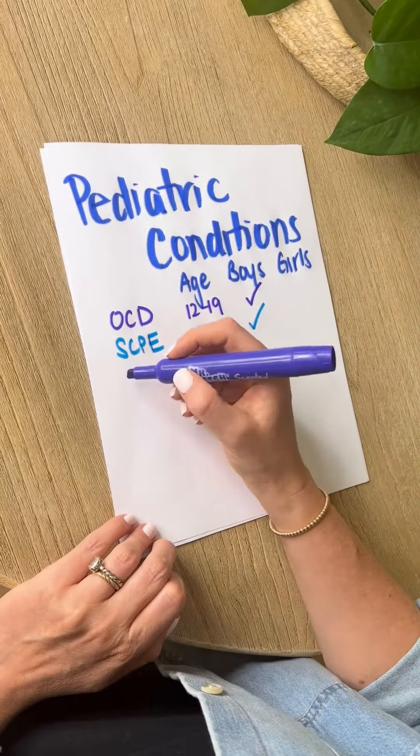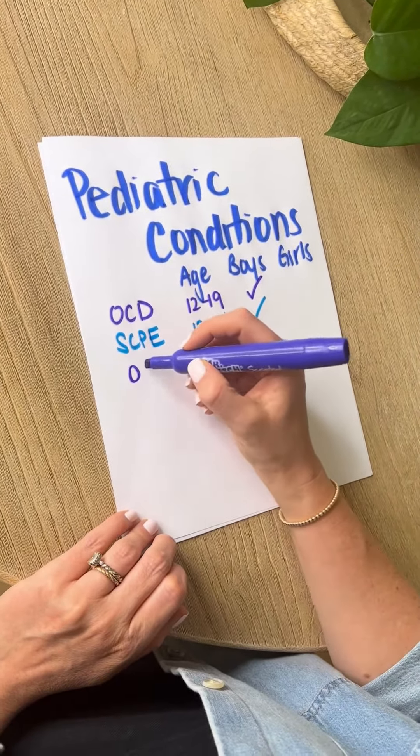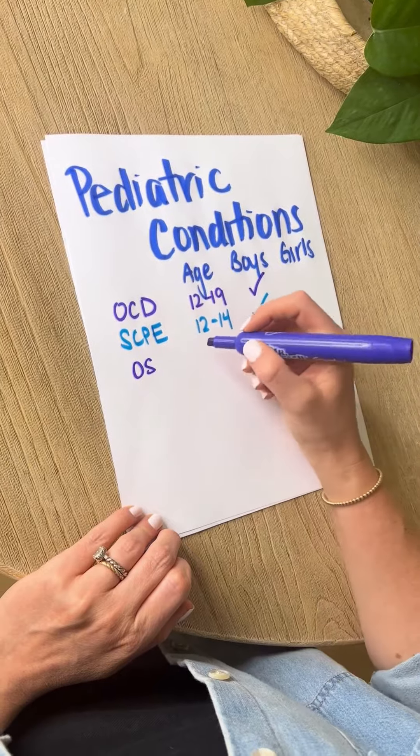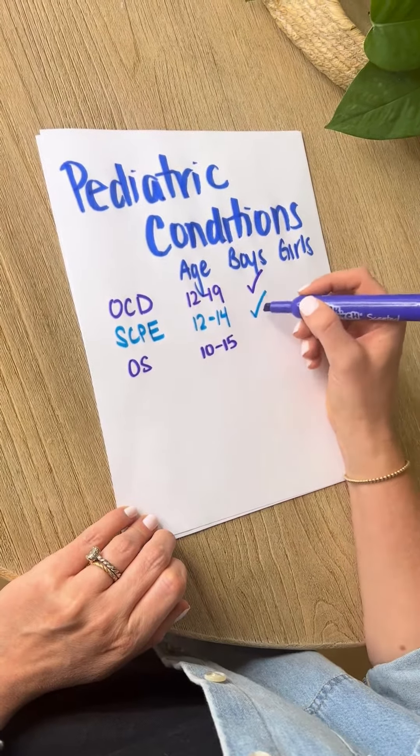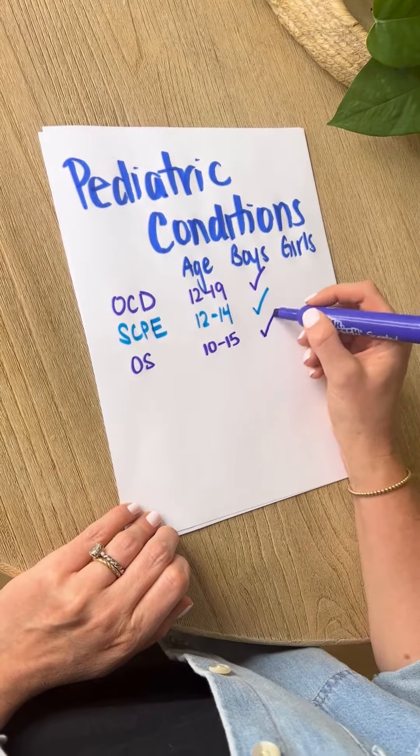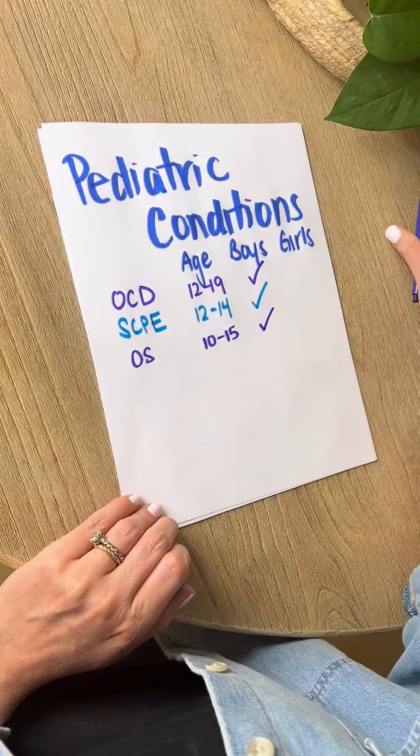Next we have Osgood-Schlatter and the age is 10 to 15 and it's more common in boys.